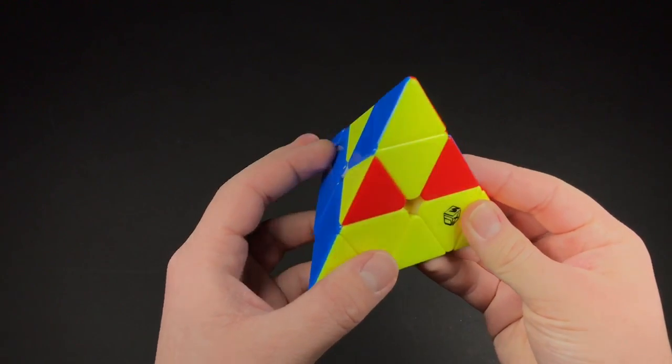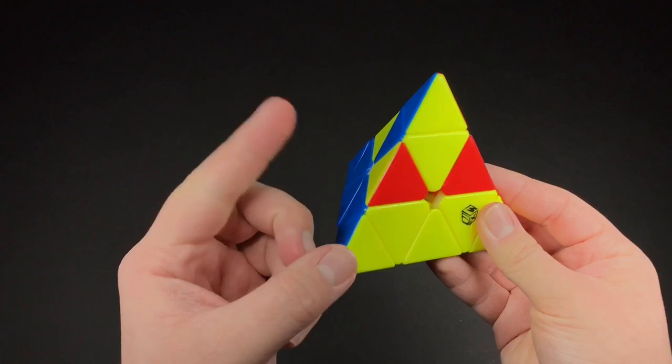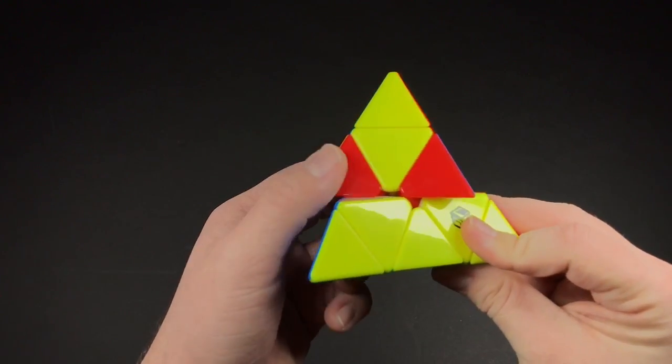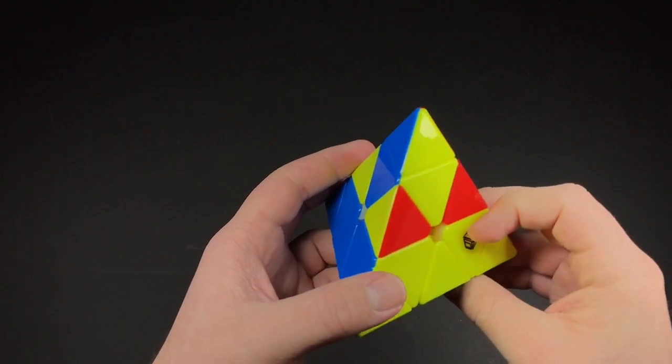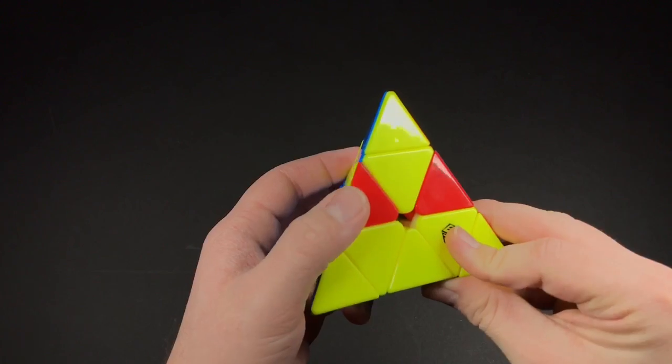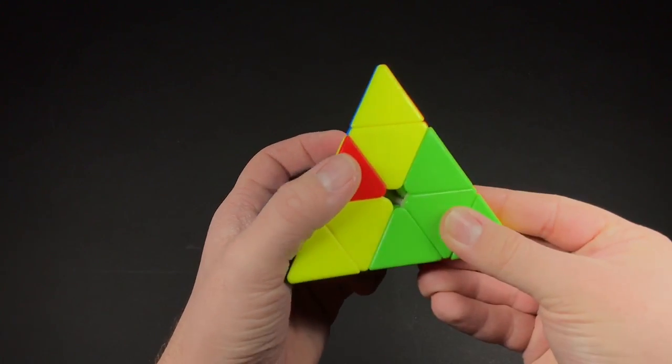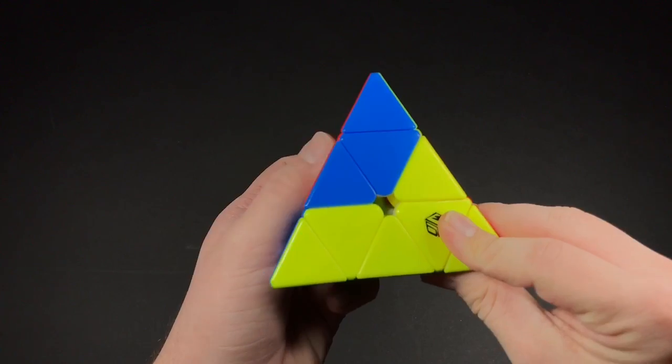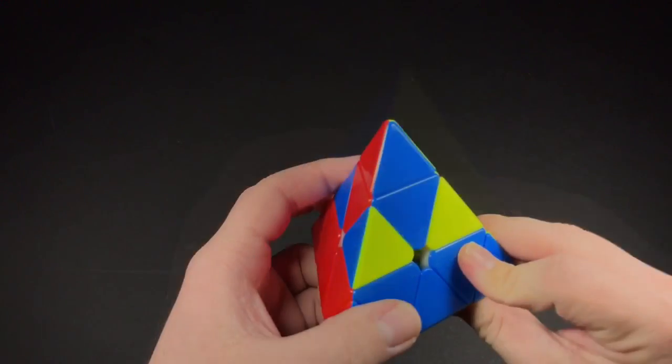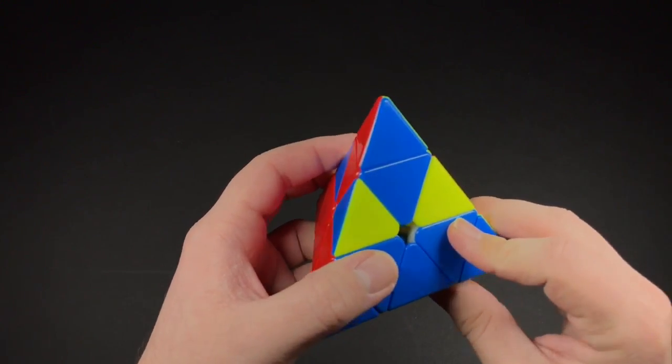Okay, and then how I finger trick it is I use my thumb instead of my index to do the U moves, which can catch a little bit, but I just turn it slower. So it goes like this. Okay, and then this case performed fast.